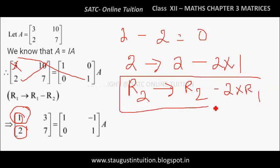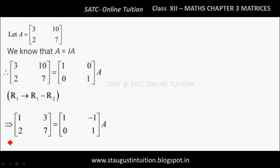This is the operation being applied to R2. That means we take R1 identity values. So the next operation is R2 gives R2 minus 2 R1. We will now apply R2 equals R2 minus 2 R1.